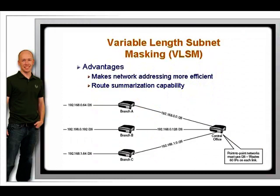Variable-length subnet masking, or VLSM, RFC 1812, can be defined as the capability to apply more than one subnet mask to a given class of addresses throughout a routed system.